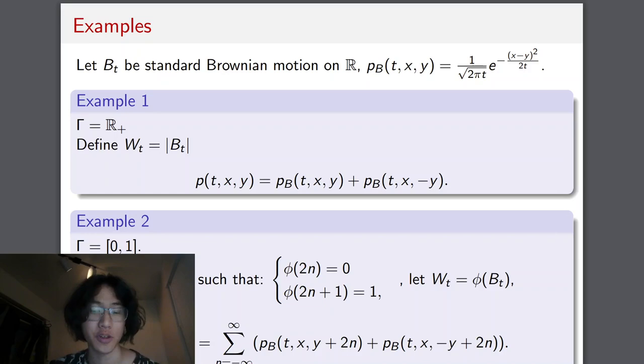We can do a really similar thing over the unit closed interval, where this time, instead of just considering the positive and the negative values, we have to consider values that are kind of like multiples of two. And we can think of it as the Brownian motion bouncing between the two vertices.